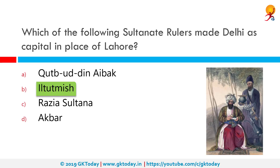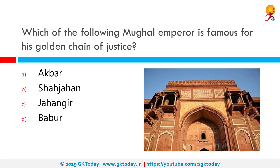Which Mughal emperor is famous for his golden chain of justice? The correct answer is Jahangir. Mughal emperor Jahangir was well known for his innovative policy of chain of justice. According to legend, Jahangir had placed a long golden chain with bells on his palace wall, so that people wanting justice could go and ring the bells.